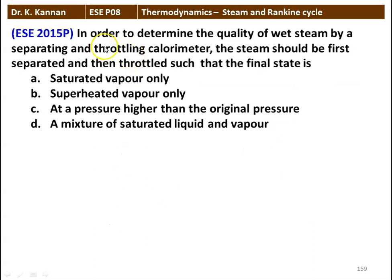The next question: in order to determine the quality of wet steam by a separating and throttling calorimeter, the steam should be first separated and then throttled such that the final state is: A: saturated vapor only, B: superheated vapor only, C: at a pressure higher than the original pressure, D: a mixture of saturated liquid and vapor. The correct answer is superheated vapor. In the throttling process, before throttling it will be a wet steam, and after throttling it will be superheated vapor.